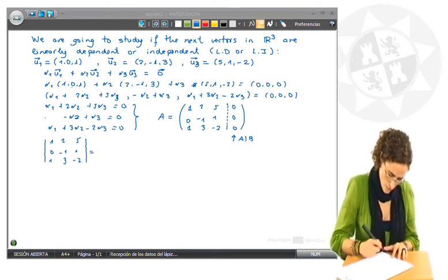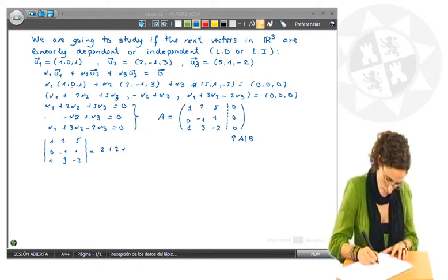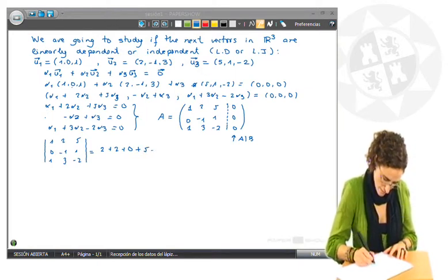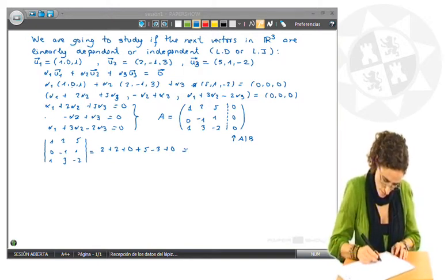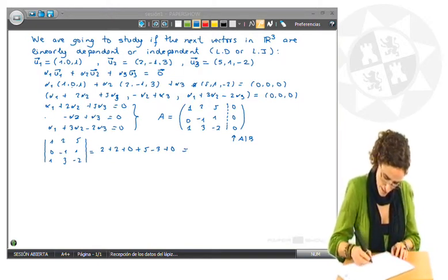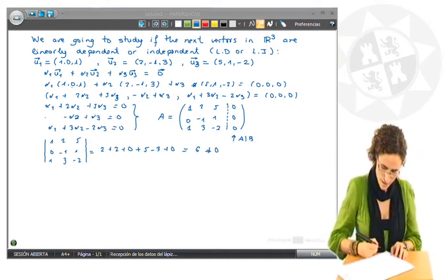Do the calculation which are 2 plus 2 plus 0 plus 5 minus 3 plus 0. So this is 4 plus 5, 9 minus 3, 6, which is different from 0.